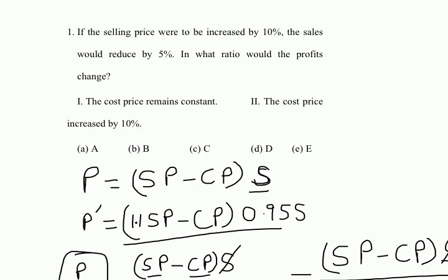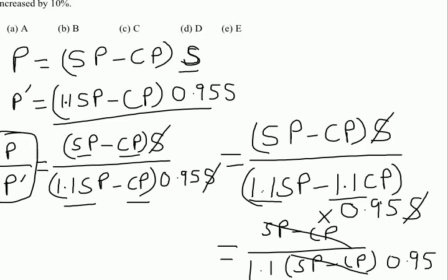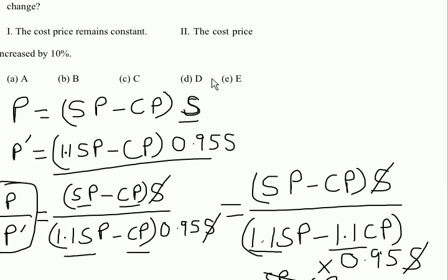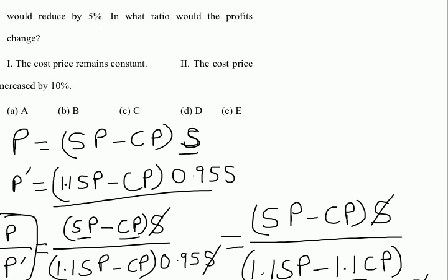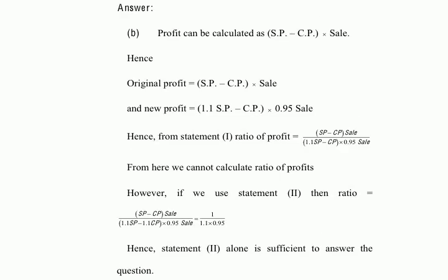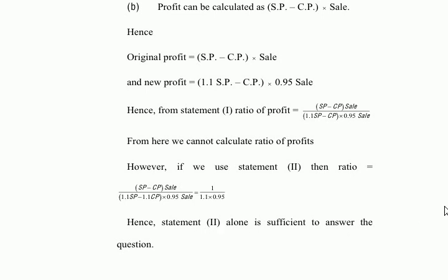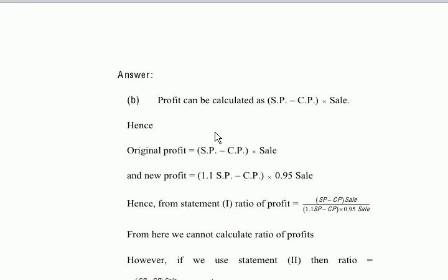So this is a very misleading question and easy to get wrong, especially if you're trying to solve it using brute guesswork due to time pressure. We find that statement one alone is not sufficient, but statement two alone is sufficient. The answer is B. Looking at the official explanation confirms that statement two alone is sufficient and the answer is B.